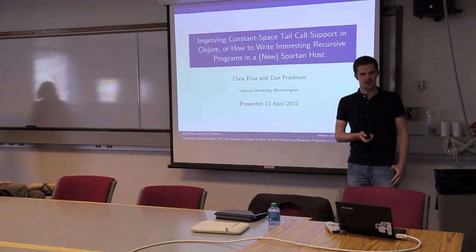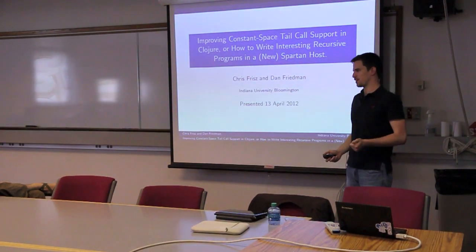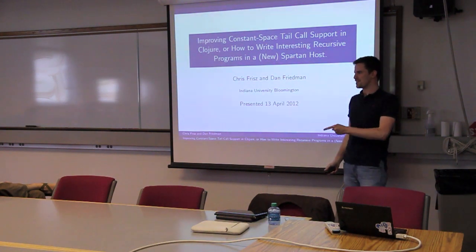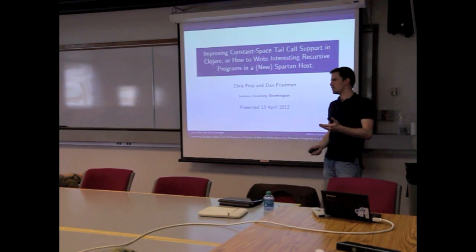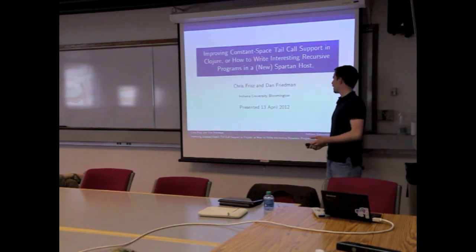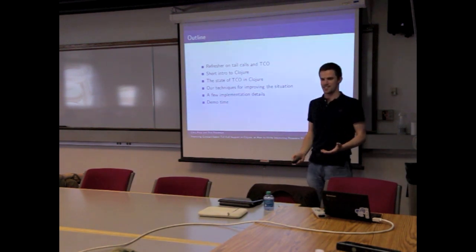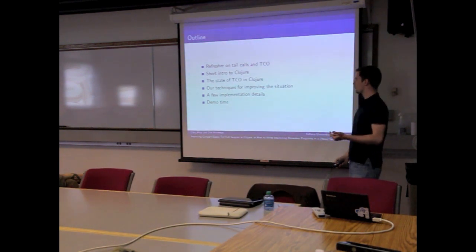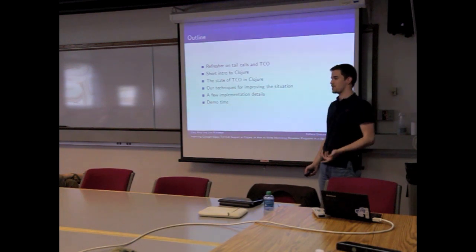This was born out of when Will and Dan went to Closure Conj and they talked to Rich Hickey. He claimed that tail call optimization was impossible in Closure because of Java calling conventions. Dan was like, no, we can do this. There are things we learned in the grad version of Dan's class, just applying all these techniques to a new problem. I'll give you a refresher on tail calls and tail call optimization, tell you about Closure, the state of tail call optimization in Closure, how we're going to try to fix things, talk about the implementation of the small compiler that we've got, and we'll have some demo time at the end.